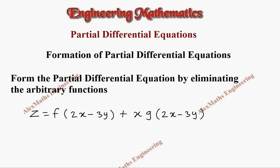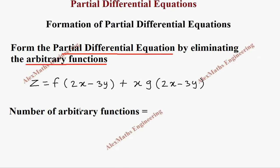Hi students, this is Alex here. In this problem, we are going to form the partial differential equation by eliminating the arbitrary functions. In this given question, we find the number of arbitrary functions are 2. Those are f and g.